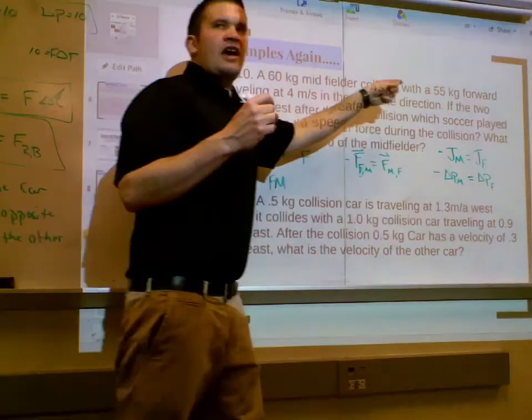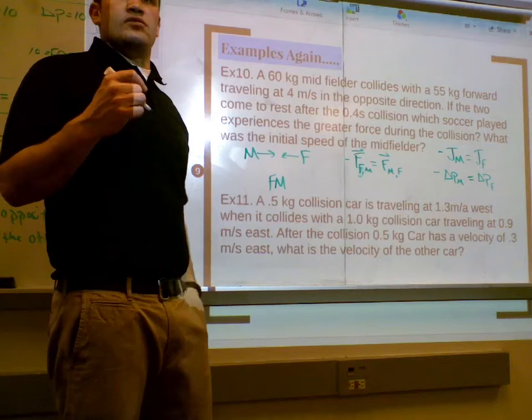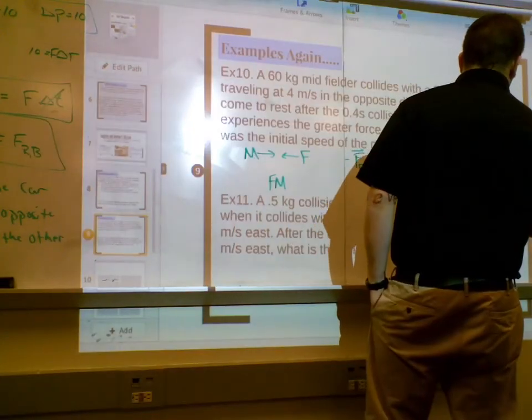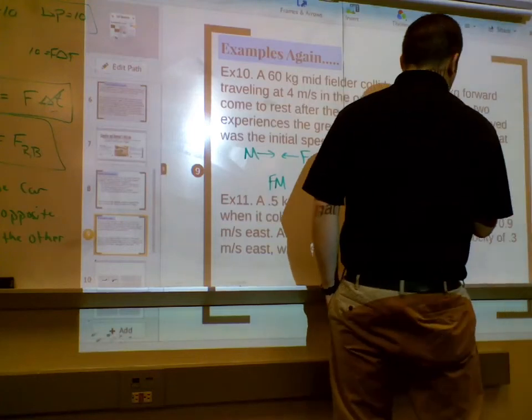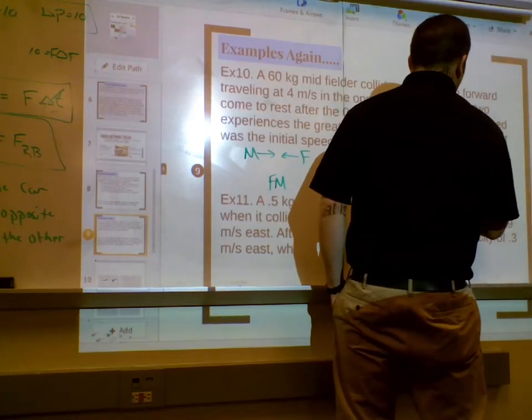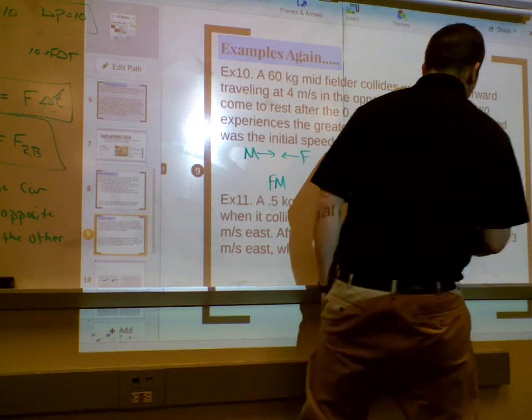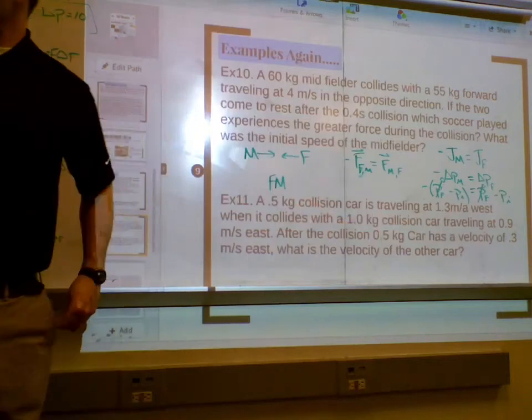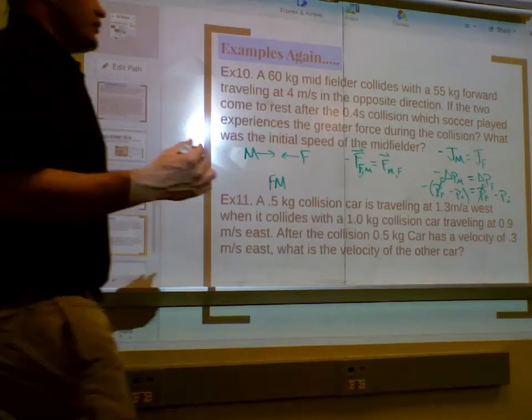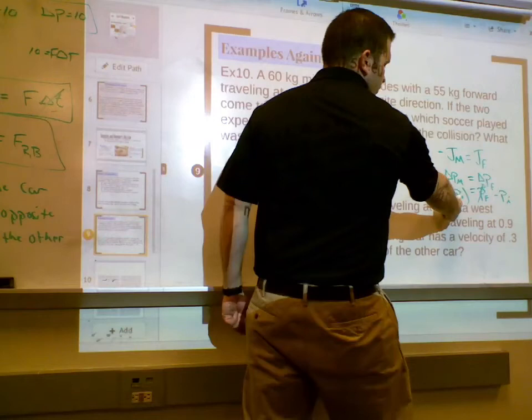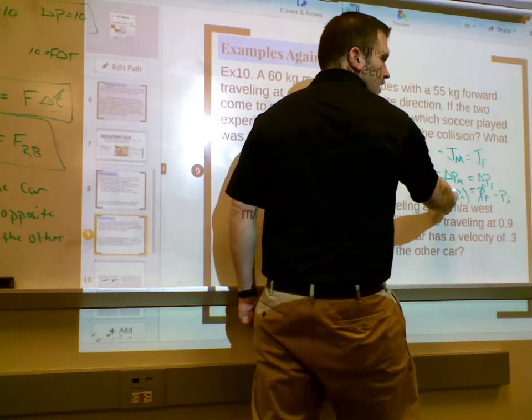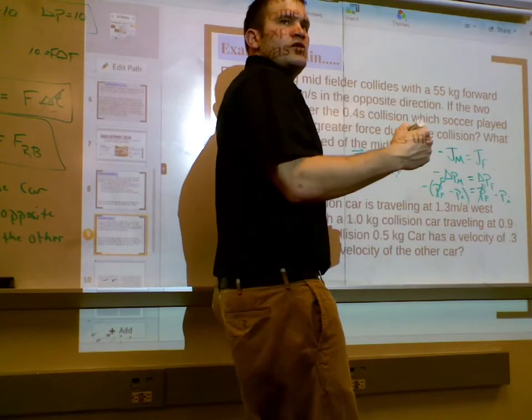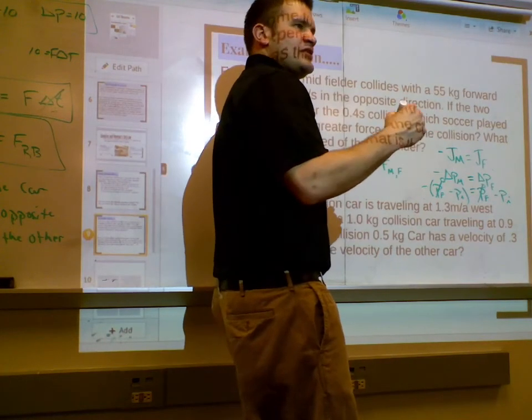55 times 4, right? Okay. So for the forward, we have P final minus P initial. And for the midfielder, we have P final minus P initial. We know both the finals are zero. Right, guys? Yes. So then we know the initial for the midfielder, two negatives make a positive, equals the negative initial of the forward. Does that make sense?